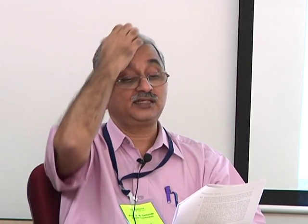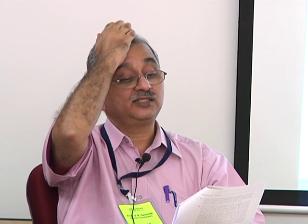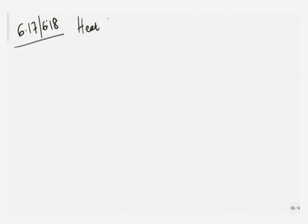Problems 6.15 and 6.16 are straightforward and use isentropic efficiencies of turbines. Since all of you have solved enough problems of that kind, there should be no difficulty. It is necessary to explain either 6.17 or 6.18 or both, as these are about heat exchangers.